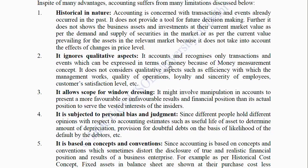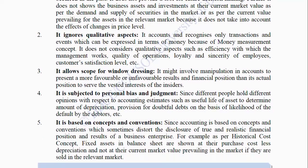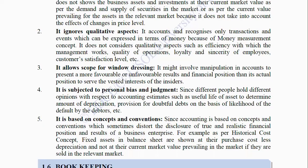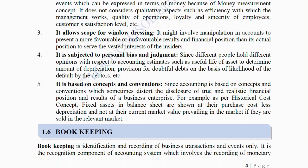Third, it allows scope for window dressing: It might involve manipulations in the accounts to present a more favorable or unfavorable result and financial position than its actual position, to serve the vested interest of insiders. Fourth, it is subject to personal bias and judgment, since different people hold different opinions with respect to accounting estimates such as useful life of an asset to determine the amount of depreciation, provision for doubtful debts on the basis of likelihood of default by debtors, etc.